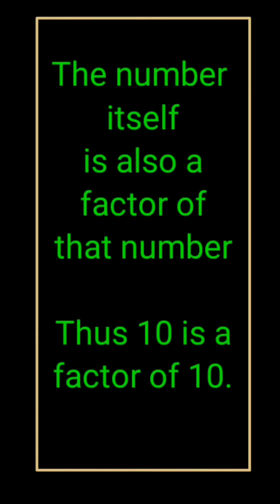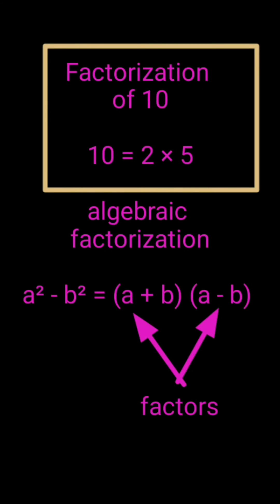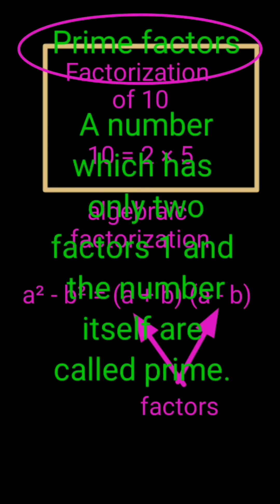The number itself is also a factor of that number, meaning 10 also can divide exactly 10, therefore 10 is also a factor of 10. When we factorize 10 or we write 10 as a product of factors, then we will be writing 10 = 2 × 5.